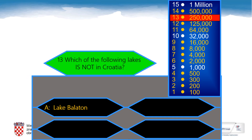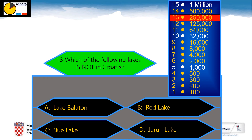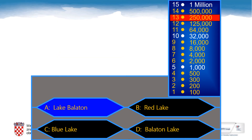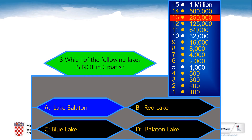Ladies and gentlemen, you only have three more questions. Question number 13 is: Which of the following lakes is not in Croatia? A: Lake Balaton, B: Red Lake, C: Blue Lake, D: Jarun Lake. And the correct answer is Lake Balaton. Lake Balaton is in Hungary, not in Croatia.